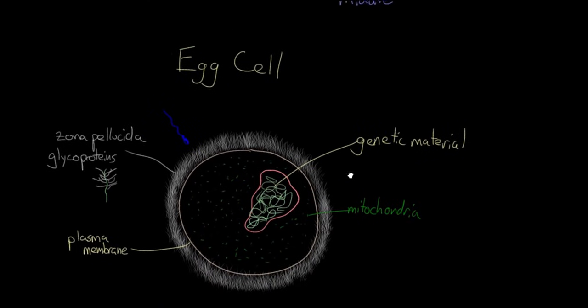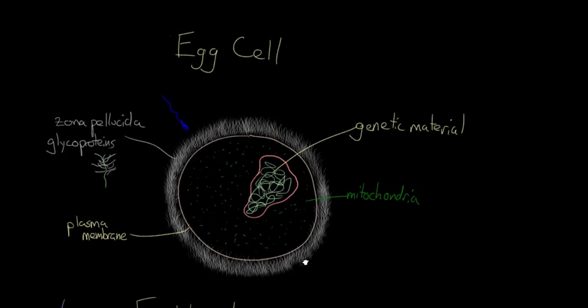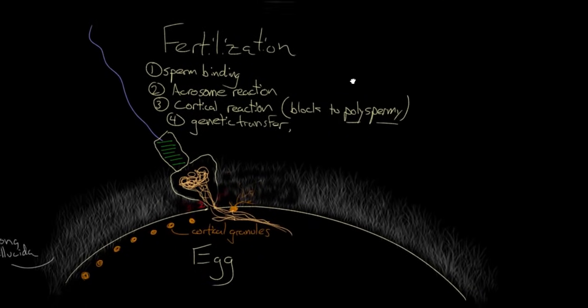The egg cell is a giant cell by comparison. It's got a specialized layer of glycoproteins on the outside that have a bunch of specialized features and then a bunch of cytoplasm including mitochondria. And then the process of egg meeting sperm itself is called fertilization.